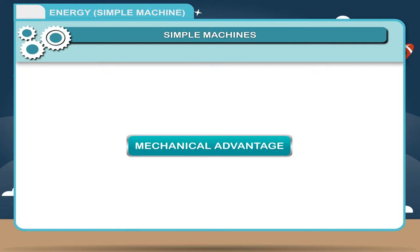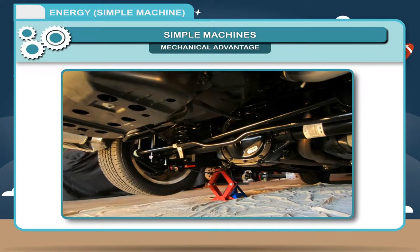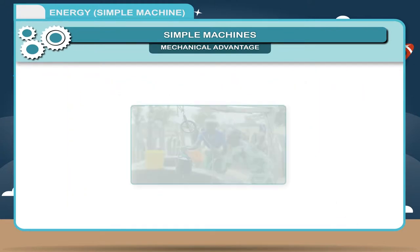Mechanical Advantage: Machines are used for the following purposes. To overcome a heavy load by applying a small effort. For example, a jack is used to lift a car. To transfer the effort at a convenient point. For example, in a bicycle, effort is applied on the pedal and that is transferred to the wheel.